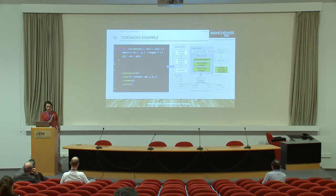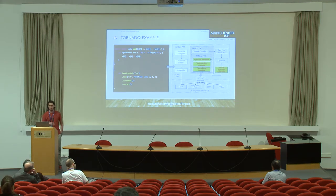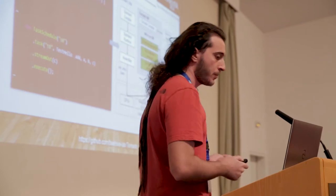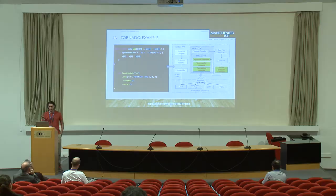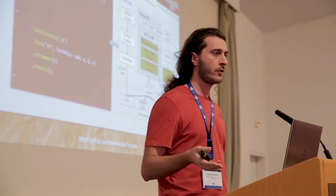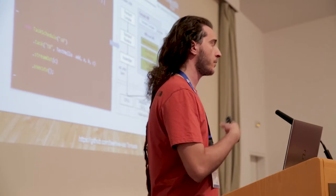When the JVM encounters a Tornado API task schedule execution, it looks for the Tornado internal bytecode and tries to execute it. At this point, we have another VM running inside the VM that interprets Tornado bytecode and can migrate tasks across devices — for example, from the CPU to the FPGA — while also moving data and performing any necessary synchronization.